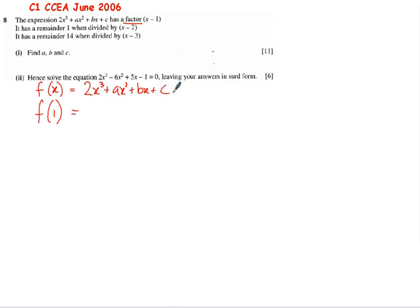Now when I put 1 into that, 2 times 1³ is just 2. 1² is 1, so that's 2 + a, 1b plus b plus c. But I know that because this is a factor, there will be no remainder. In other words, a + b + c equals -2.